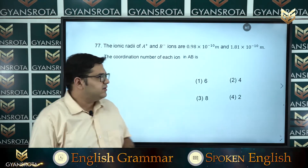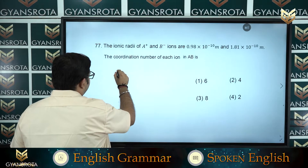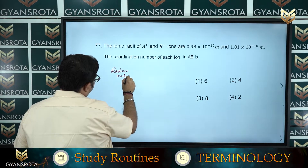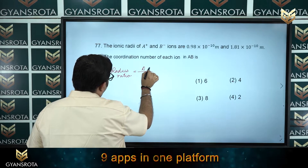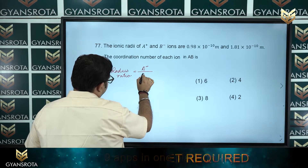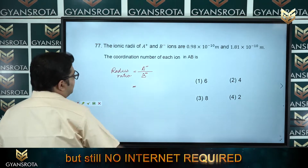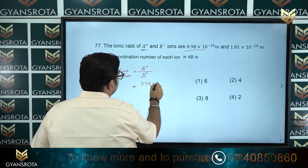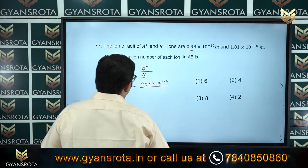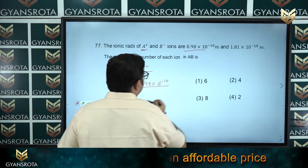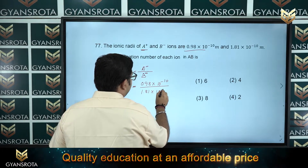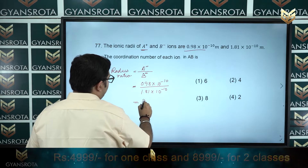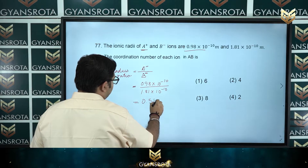Moving to the solution part: for this we have to calculate the radius ratio. The cationic radius divided by the anionic radius — A⁺ radius is 0.98 × 10⁻¹⁰ divided by the anionic radius 1.81 × 10⁻¹⁰. Solving this gives approximately 0.541.